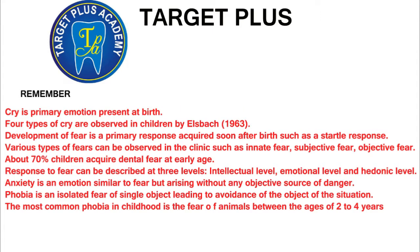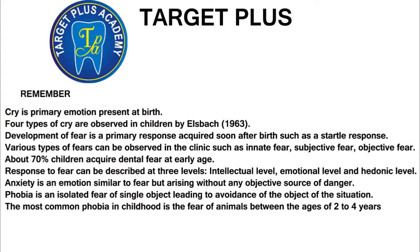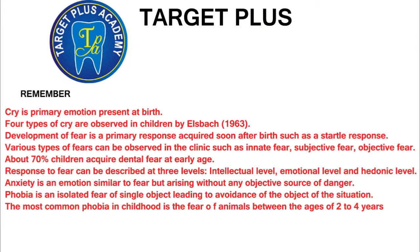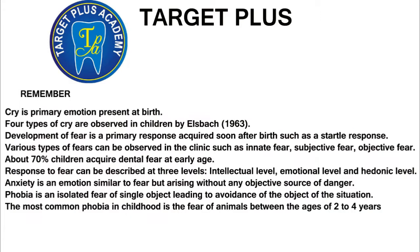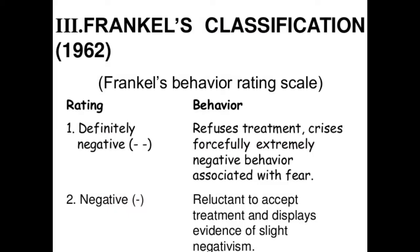Few important points: cry is the primary emotion present at birth. Four types of cry are observed in children. Development of fear is a primary response acquired soon after birth. About 70% of children acquire dental fear at an early age. Response to fear can be described at three levels: intellectual, emotional, and hedonic. Anxiety is an emotion similar to fear but arising without any objective source of danger. Phobia is an isolated fear of a single object leading to avoidance of that object or situation. The most common phobia in children is the fear of animals between the ages of 2 to 4 years.